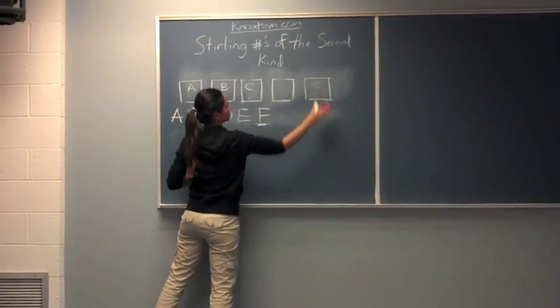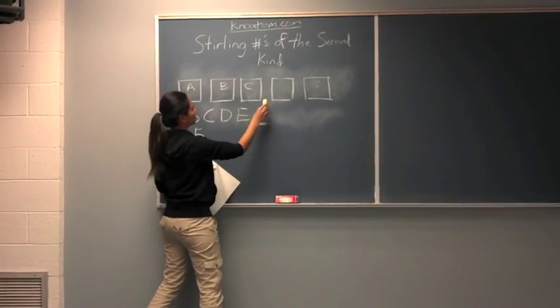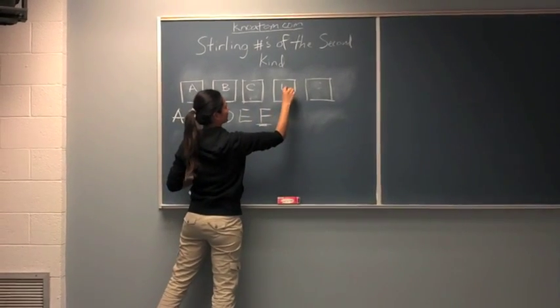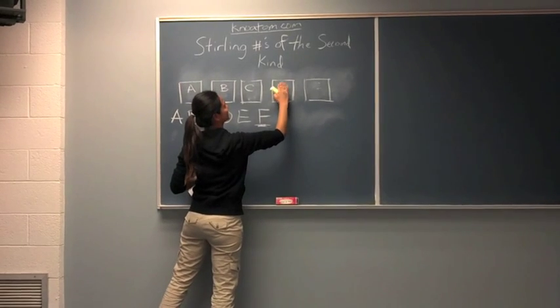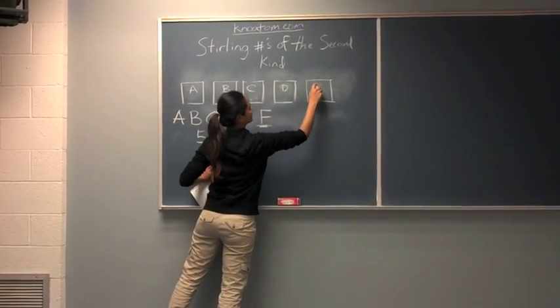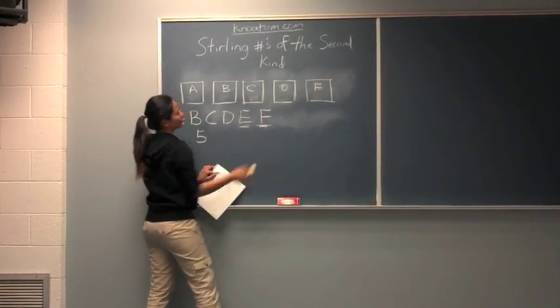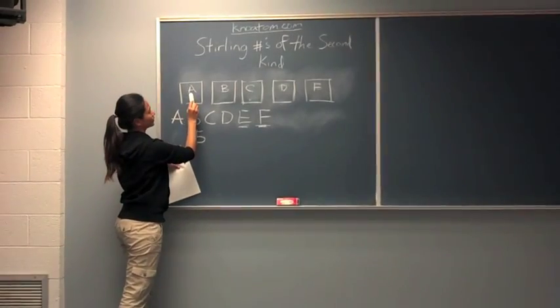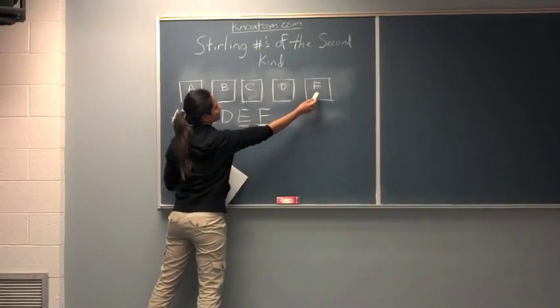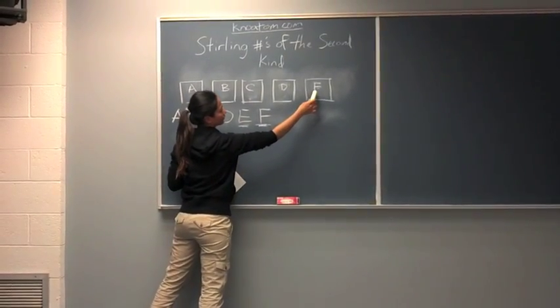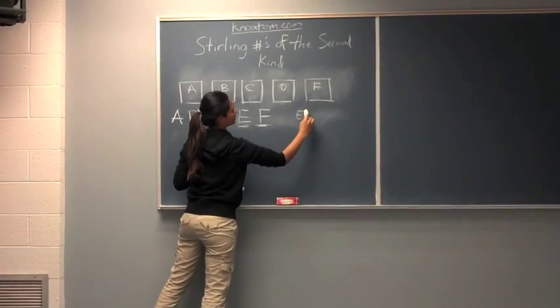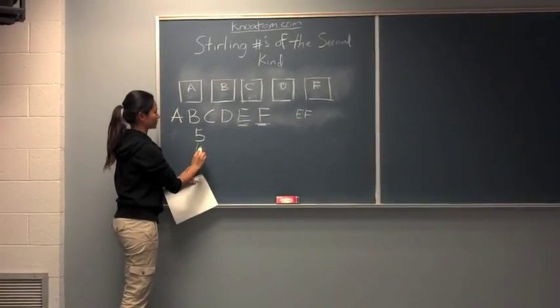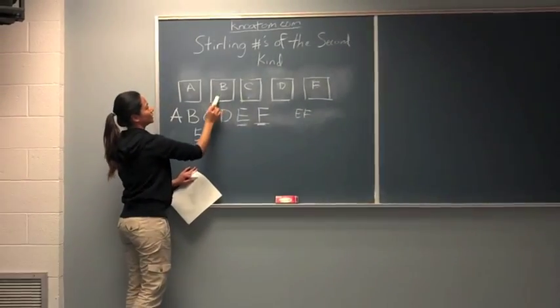And then, we'll continue with, we'll take out person E. So, then we can put person E into any of this room. But then, we already had the combination of E and F, so then we'll have 4 choices to put E.